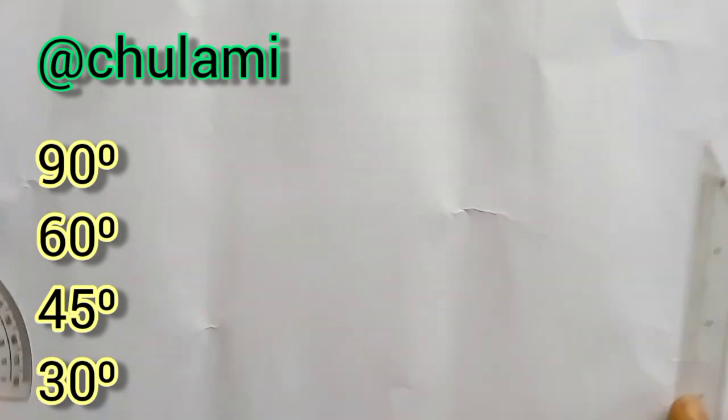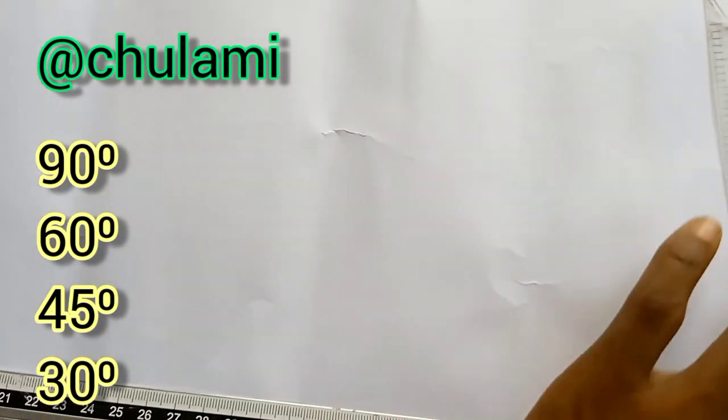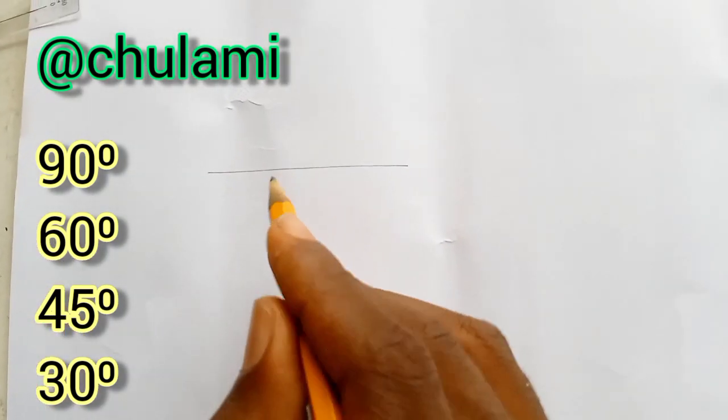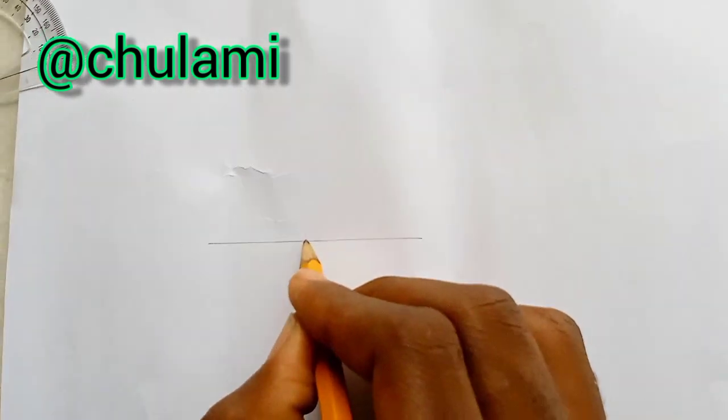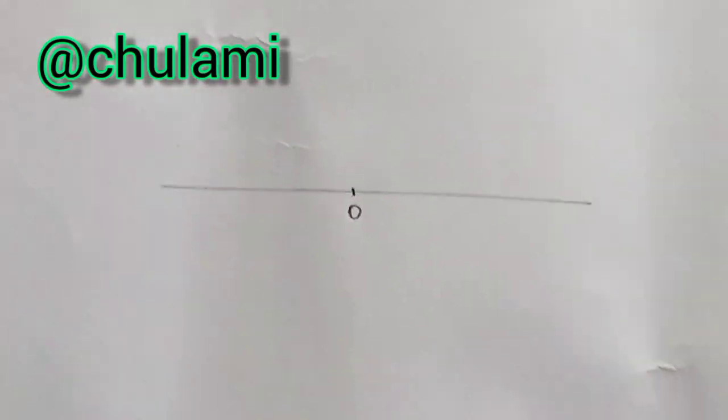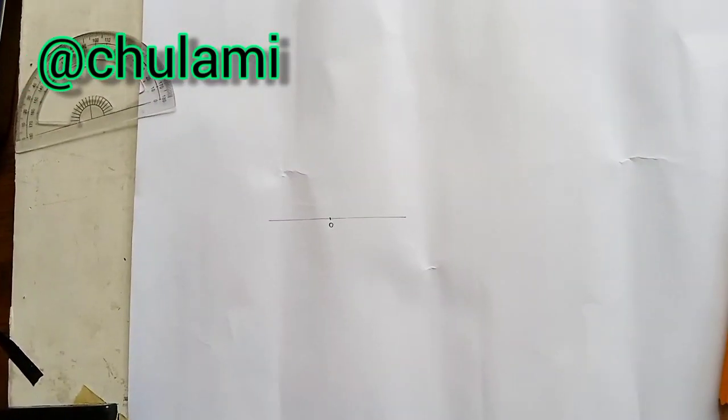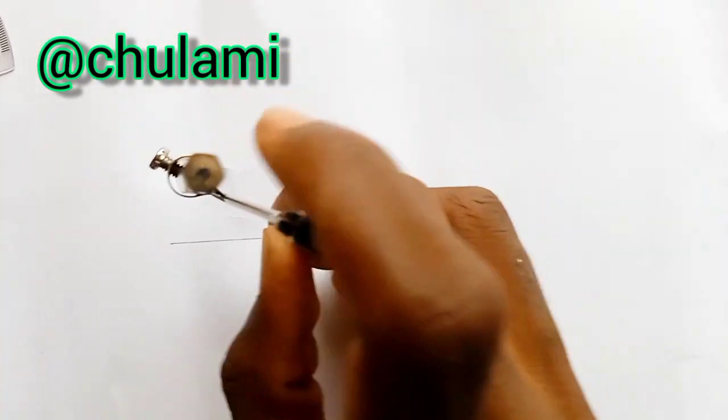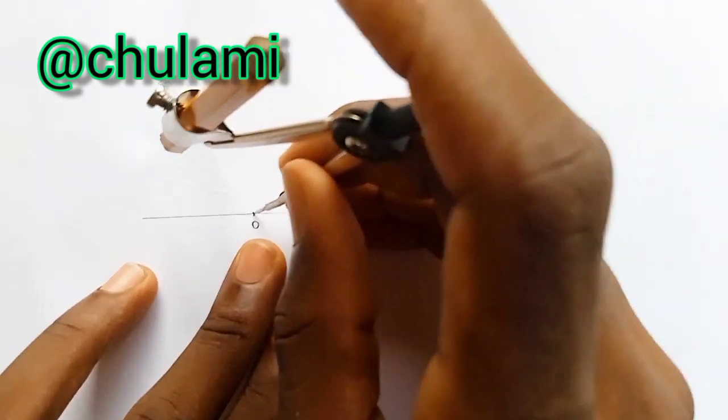Now to draw angle 90, the first thing you need to do is to draw a straight line. Once you draw your line, you mark any point in the line. You can call that point point zero. Now after that, you get your compass, pin at this point zero.